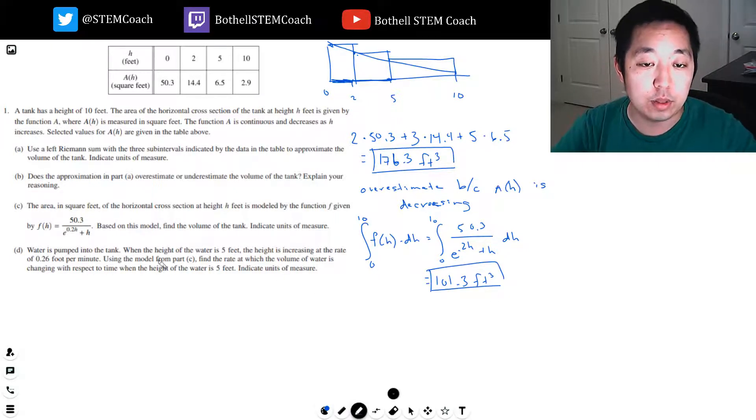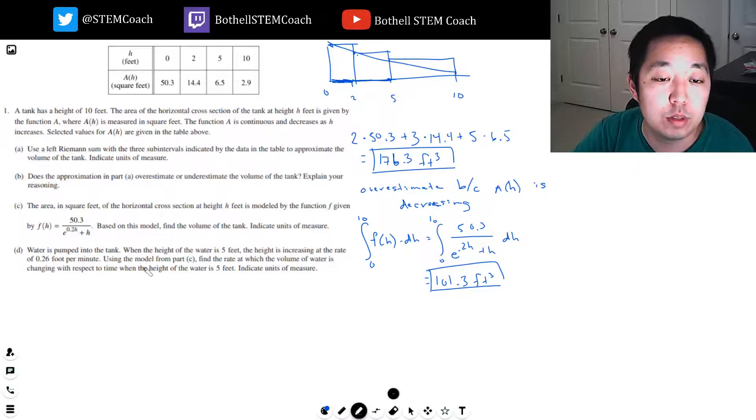Water is pumped into the tank. When the height of the water is 5 feet, the height is increasing at a rate of 0.26 foot per minute. Use the model for Part C to find the rate at which the volume of water is changing.